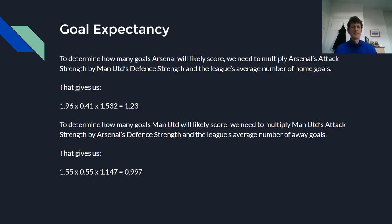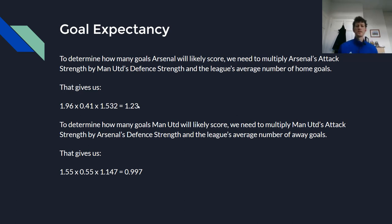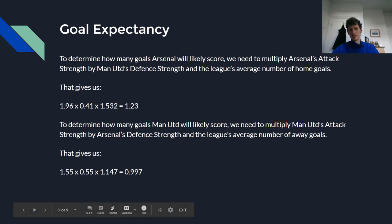The next thing we need to calculate is the goal expectancy. To determine how many goals Arsenal will likely score, we need to multiply Arsenal's attack strength by Manchester United's defence strength and the league's average number of home goals. Slotting those figures in gives us 1.23 — so Arsenal would be expected to score 1.23 goals. And to determine how many goals Manchester United will score, we multiply Manchester United's attack strength by Arsenal's defence strength and the league's average number of away goals, which gives us 0.997.